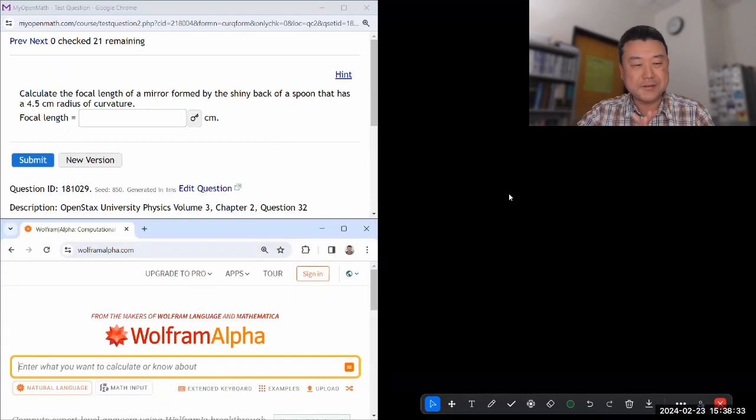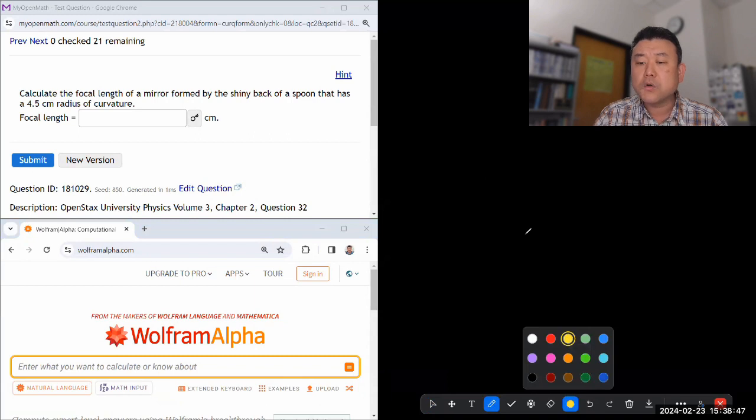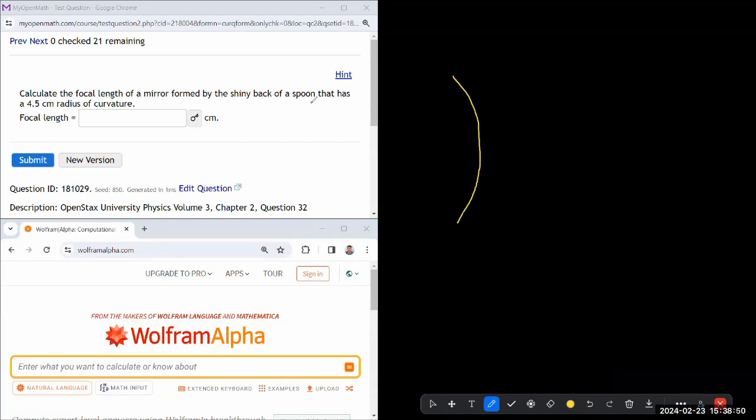That's one dash two. Okay, so this is the next question. It says calculate the focal length of a mirror formed by the shiny back of the spoon. Okay, let me just make sure I have the right mental image. So we are talking about a convex mirror that has some radius of curvature. So it's R, we are given that 4.5 centimeters. So focal length.